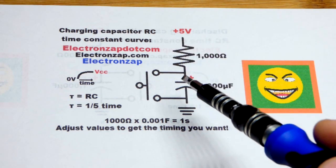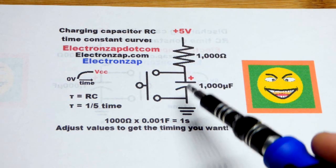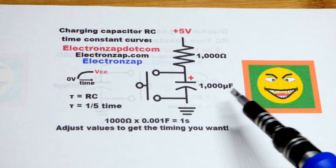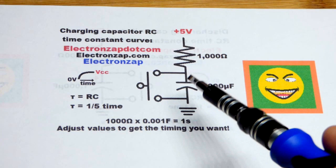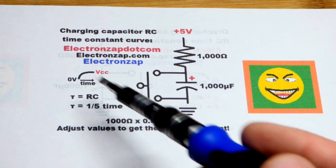That sets how much current flows and starts charging the capacitor. The value of the capacitor, the size of it, determines how long it takes to charge up and get a voltage change.